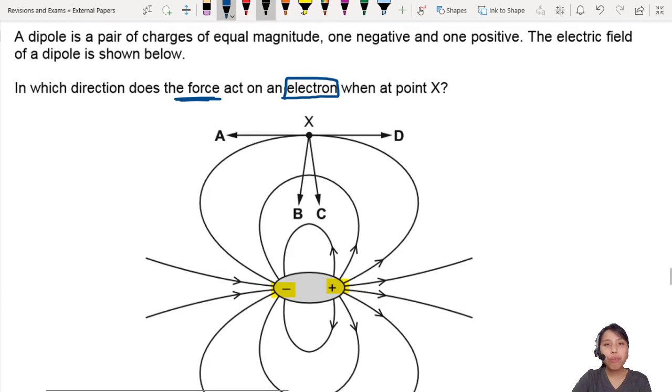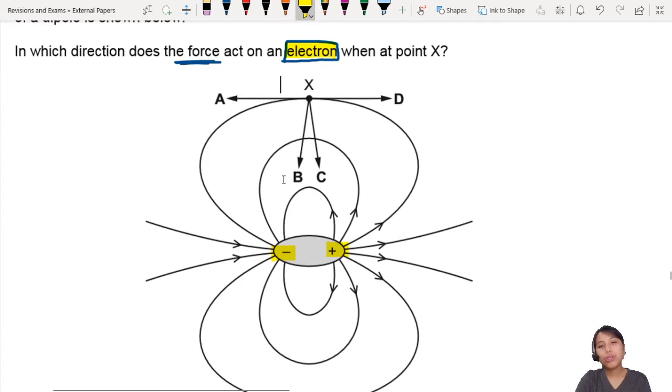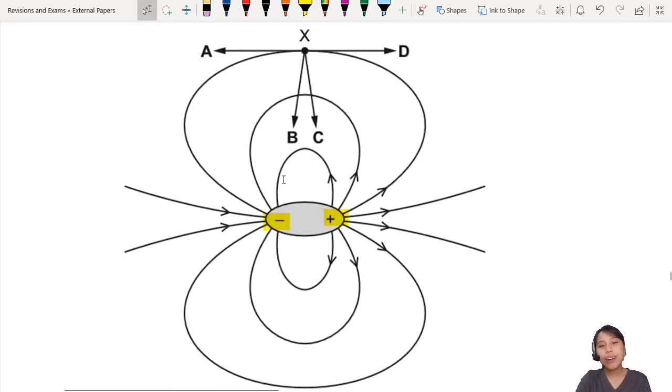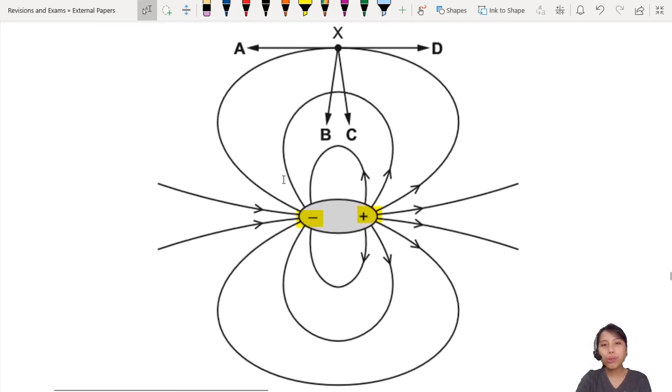This is very important - force on an electron. If you look at this, how do you draw the force? Where would the force point? These are all the field lines, so there are a few rules you need to remember.